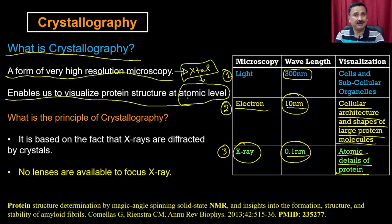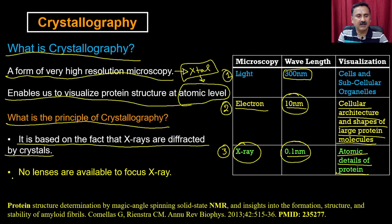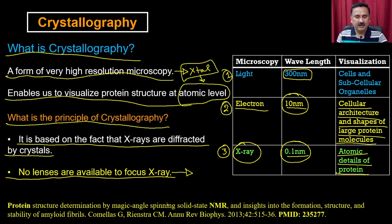Since X-ray crystallography is a form of high-resolution microscopy, it enables visualization of protein structures at the atomic level, allowing you to precisely see individual atoms. The principle is based on the fact that X-rays are diffracted by crystals. Unlike conventional microscopy, there is no lens involved — you cannot simply visualize an object directly.